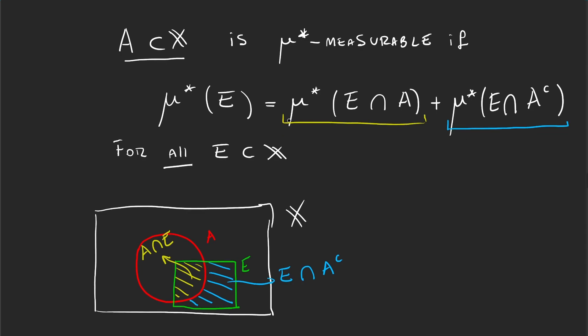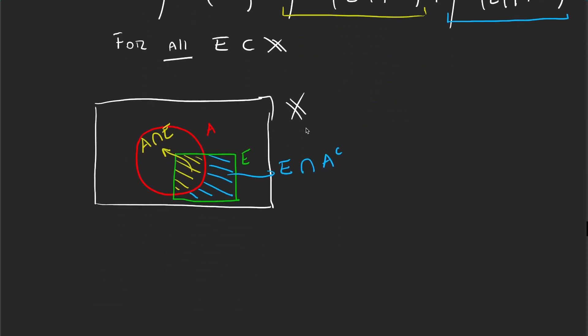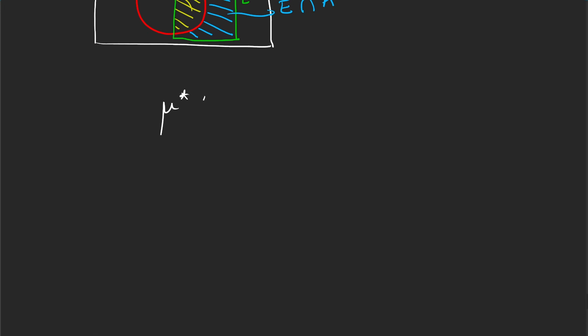And another important thing to notice is we have an equality here, and whenever you have an equality it means that you have to prove the smaller than or equal to and greater than or equal to. Because if these two things satisfy, then you have an equality. But in this case, one of those inequalities is trivial because μ* of E is always smaller than or equal to μ* of E ∩ A plus μ* of E ∩ A^c. So this one is trivial.